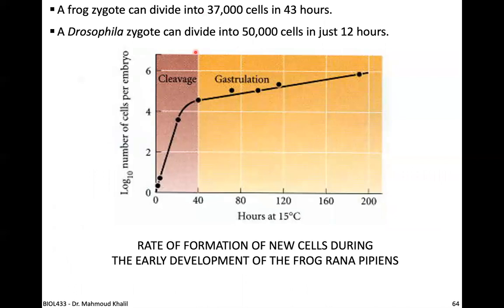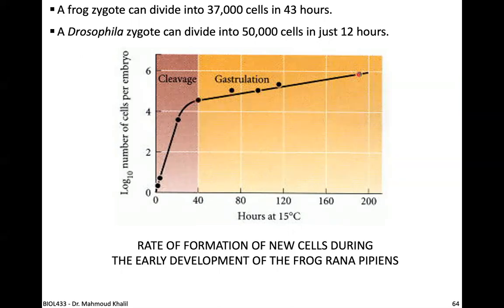Cleavage of mammals occurs at a rapid rate never seen again — a zygote can divide into 30,000 cells in 43 hours. In Drosophila the zygote divides into 50,000 cells in just two hours. A line chart of frog (Rana) early development shows mitotic divisions markedly increasing after fertilization until reaching a peak, with a little increase continuing during gastrulation.